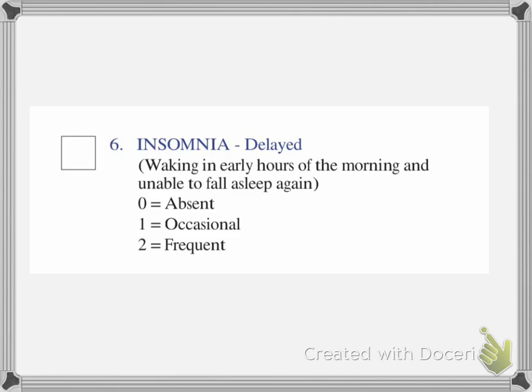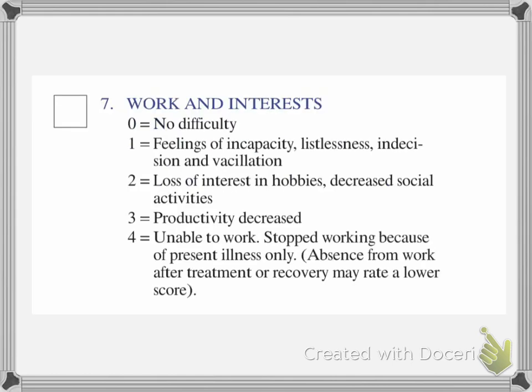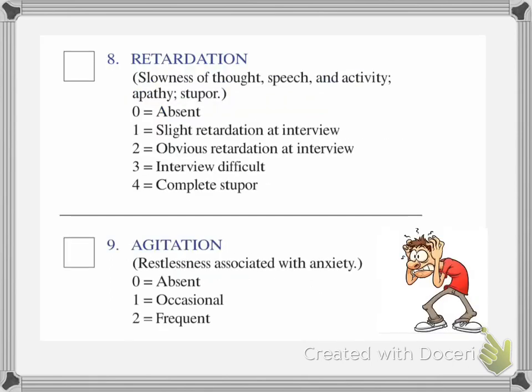Question seven is work and interest. If they feel incapacity or indecision, mark it a one. Loss of interest in hobbies or decreased social activity is a two. If there's a decrease in productivity, mark it a three. If they're completely unable to work, mark it a four.